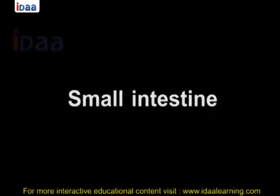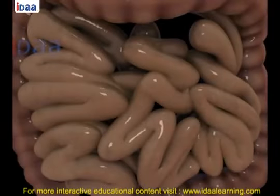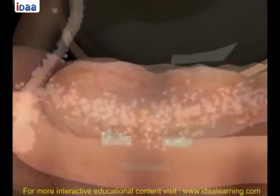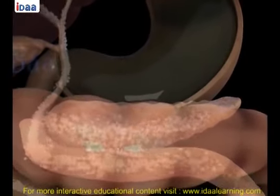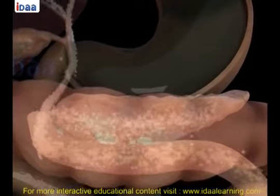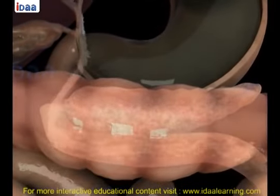Small intestine: the small intestine is a highly coiled structure and is about 7.5 meters long. As soon as the small intestine receives food from the stomach, the digestive juices from the liver and pancreas are mixed into it.